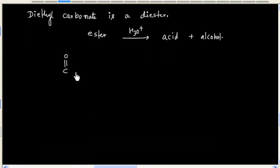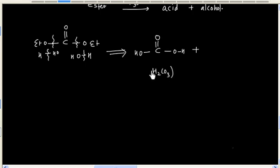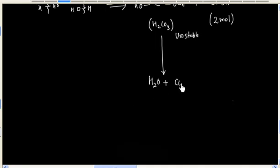So in this case we will have hydrolysis. It will give 1 mole of H2CO3 and 2 moles of ethyl alcohol. H2CO3 is unstable and it will dissociate to H2O plus CO2 gas.